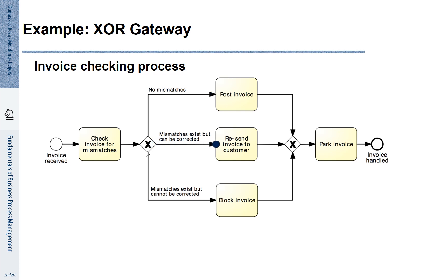If there are mismatches but they can be corrected, we resend the invoice to the customer. If the mismatches cannot be corrected, we block the invoice. Once we have blocked the invoice, we continue towards the XOR join. The token is simply forwarded to park the invoice and the process completes.